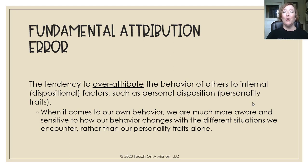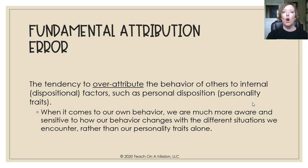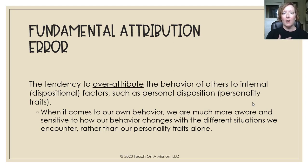Usually we attribute what happens to other people as happening because of their internal stuff — we tend to overemphasize behavior based on someone's internal factors or their personality traits. When it comes to our own behavior, we tend to do the opposite, especially with negative stuff. If something bad happens to someone else, it's because of who they are. If something bad happens to us, we usually attribute it to something in the environment — 'I was having a really bad day,' 'There was sun in my eyes.'